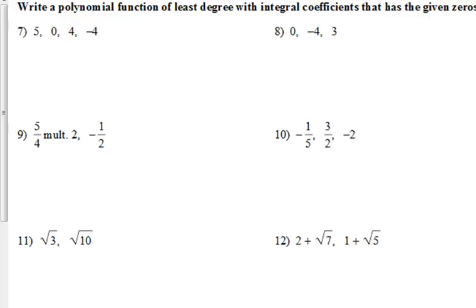So what we're going to start with is we're going to talk about writing a polynomial function. We're going to come up with a function that has these zeros. Number seven there says zeros are five, zero, four, and negative four. So we're going backwards. We have the answers. We've got to figure out what the original problem was, which sounds really hard, but it's really not. Because, we just worked on solving, right? So solving, we factored, and then we set our factors equal to zero, and that gave us the answer.